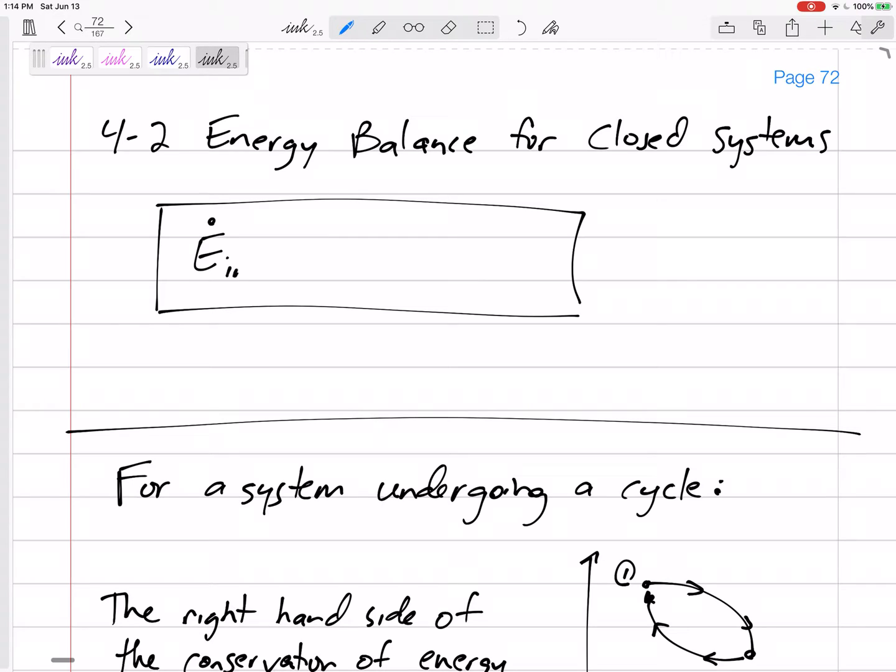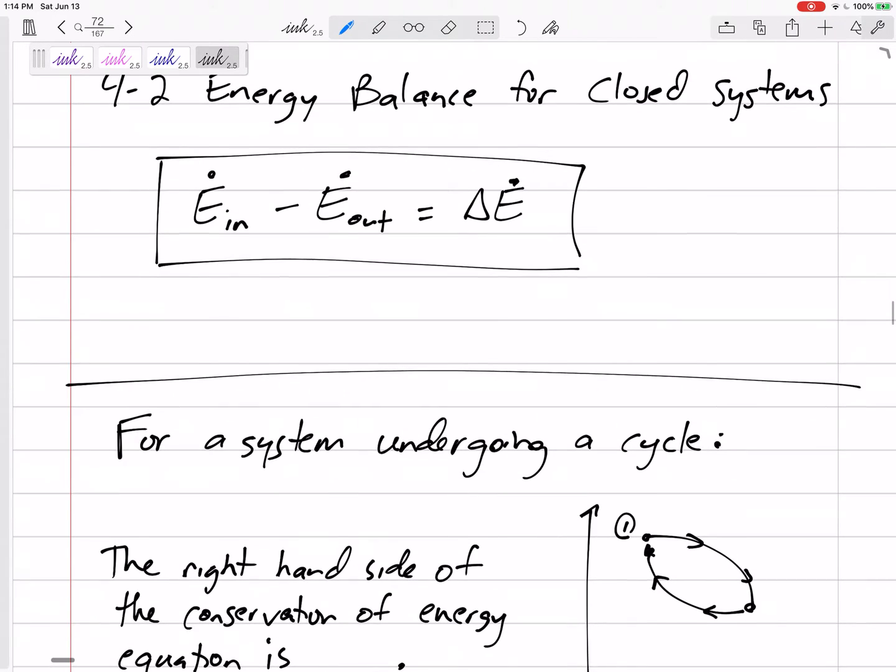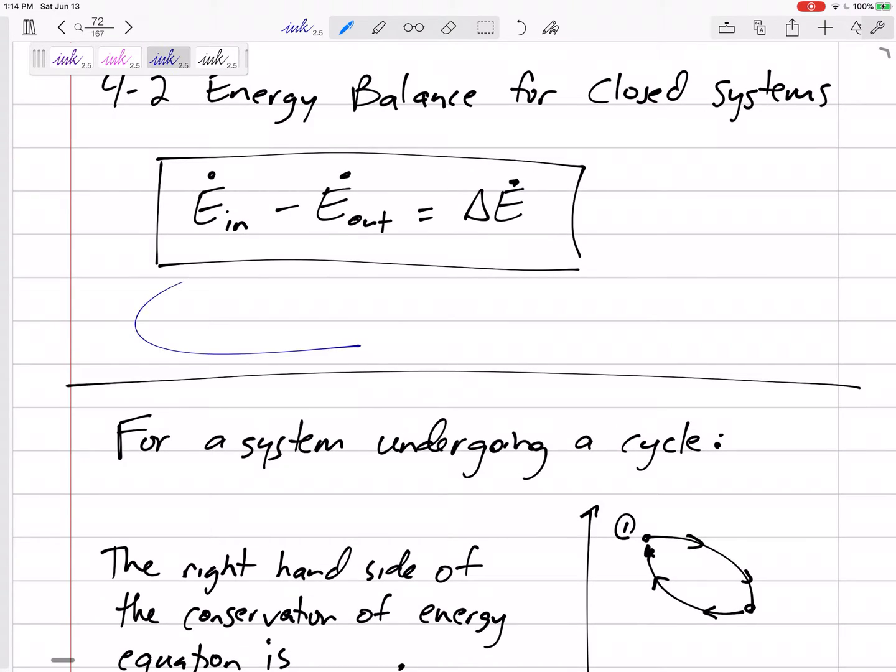It says all the energy going in minus all the energy going out equals change in energy. I'm putting dots. This is the power equation, but these could be just total energies, capital E. These could be lowercase energy, specific energies. So on the left-hand side, we're going to have Q and W. We're not going to have any energy from an inlet or outlet because it's a closed system. All right, so what are we looking at for the right-hand side?